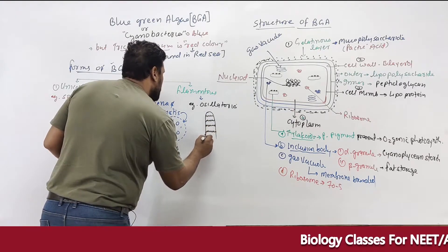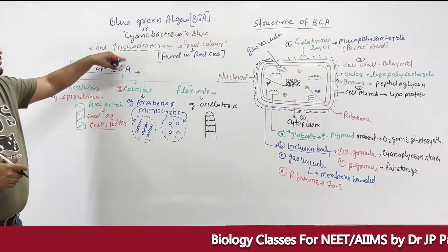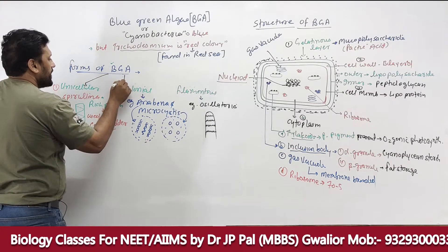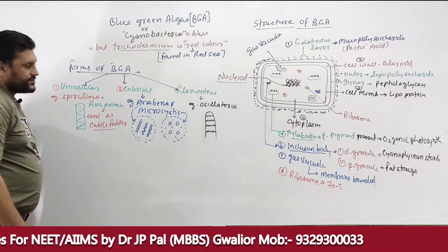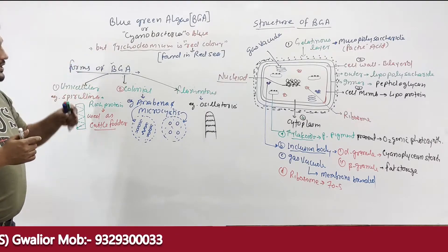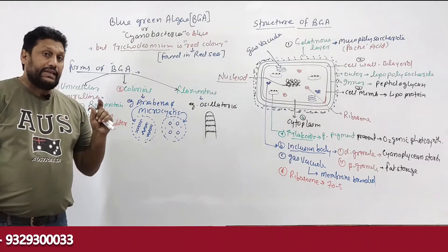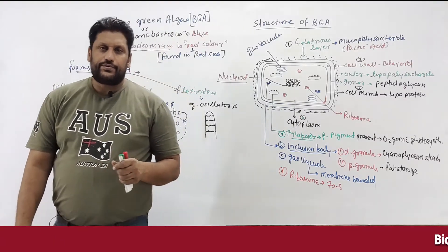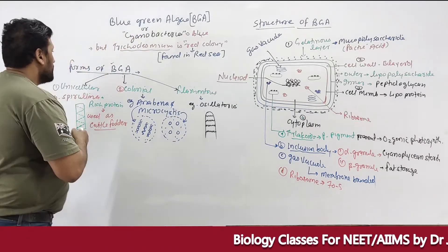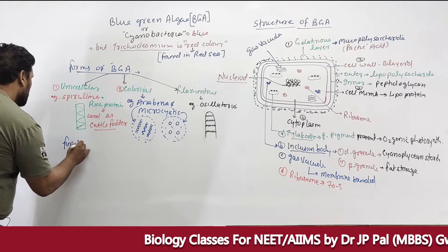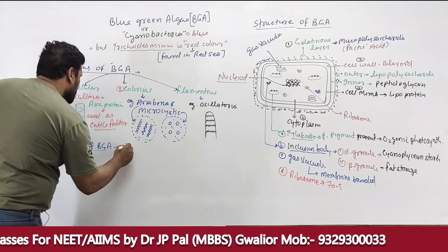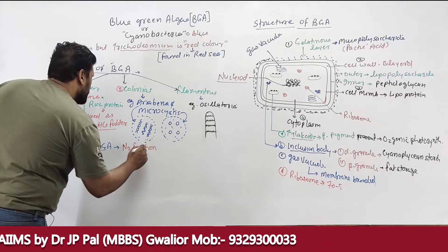Filamentous form: example is Oscillatoria, which grows in long filament-like (noodle-like) structures with a stripe pattern. So the three different forms of BGA are: unicellular, colonial, and filamentous. Now let's discuss the function of BGA.